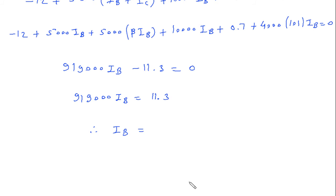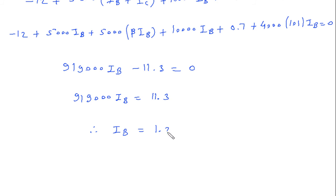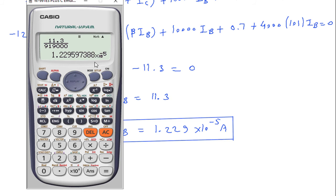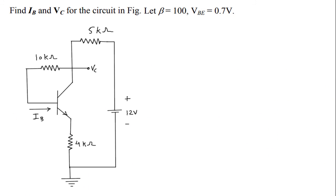Collecting terms: 5000 + 5000·100 + 10,000 + 4000·101 = 919,000. And −12 + 0.7 = −11.3. So 919,000·IB = 11.3, therefore IB = 11.3 / 919,000 = 1.229 × 10⁻⁵ A, or 12.29 microamperes.